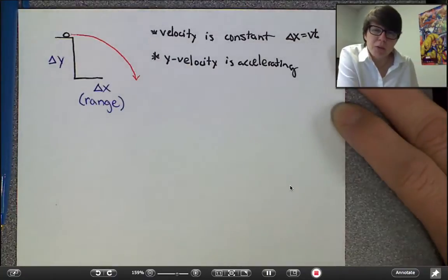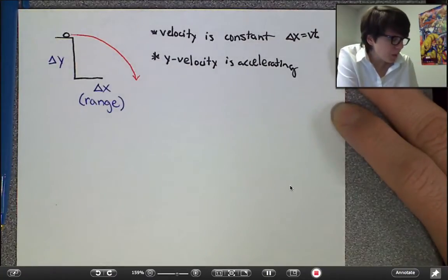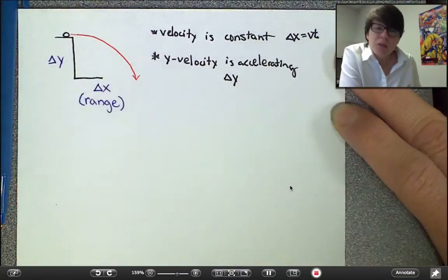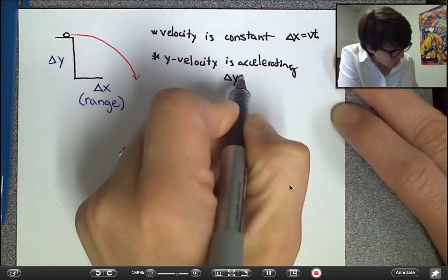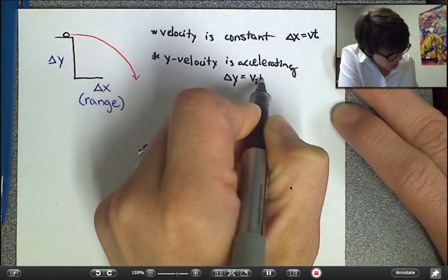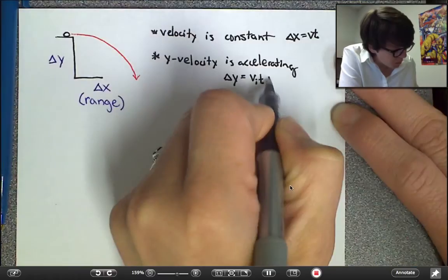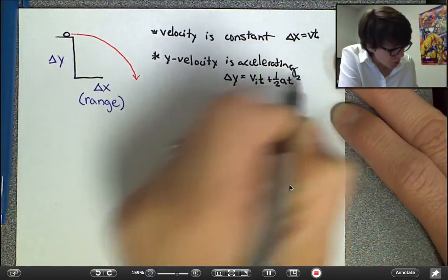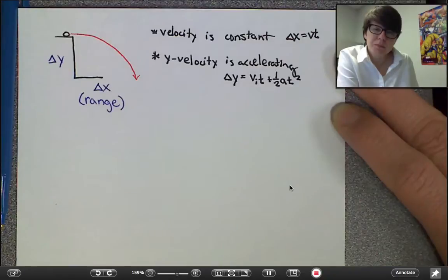Now there are a lot of different kinematic relationships you might evaluate for this. But the one that really matters the most for us is that the height is equal to the initial velocity times the time of fall plus a half times the acceleration times time squared.